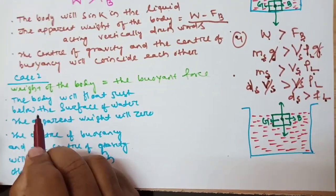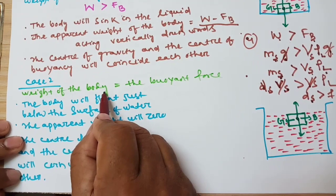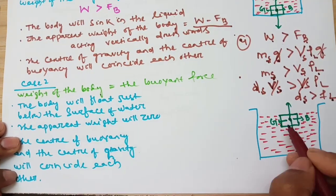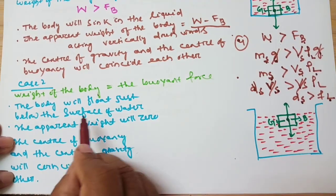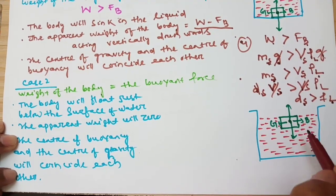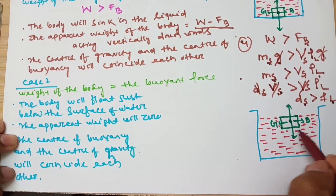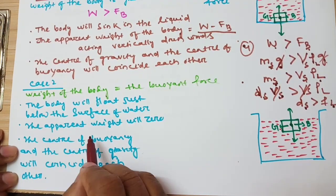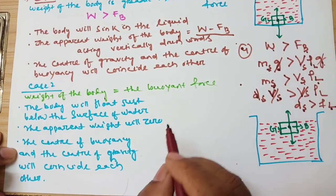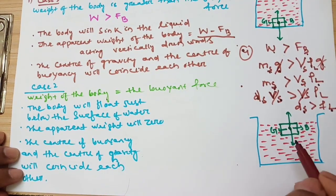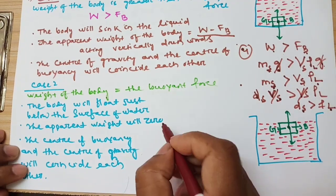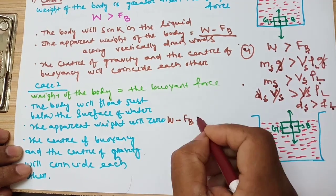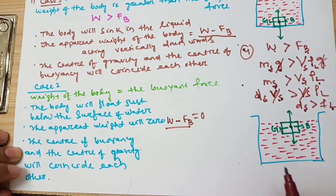Now come to Case 2: when the weight of the body is equal to the buoyant force. In this case the body will float just below the surface of water. Second point: the apparent weight will be zero, because W minus F — both are equal — so apparent weight becomes zero.